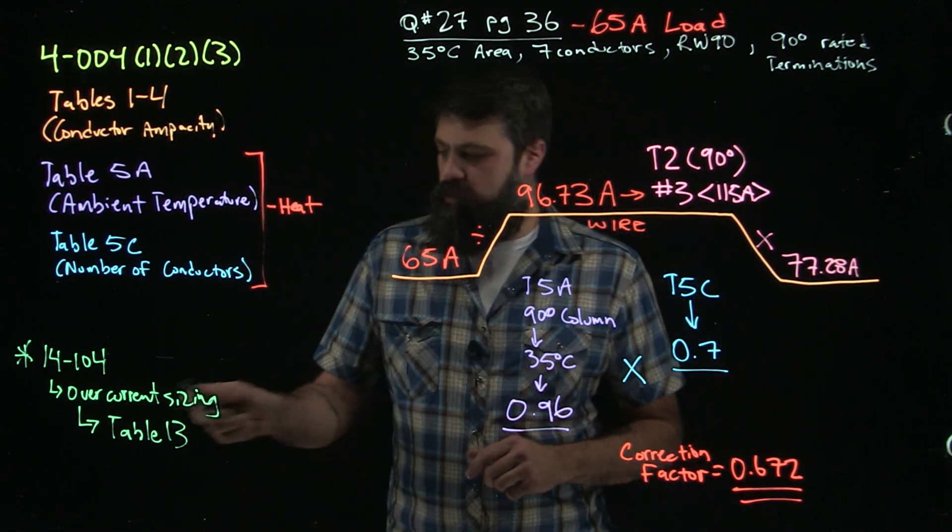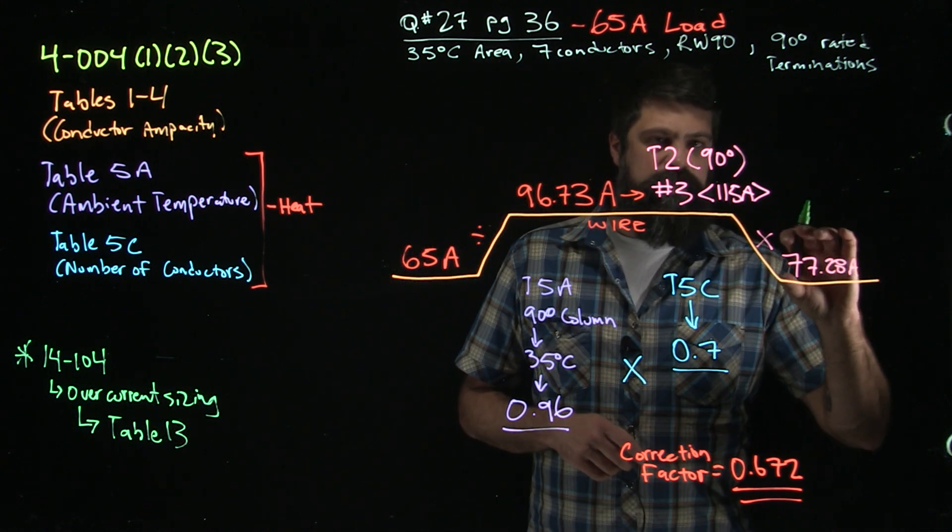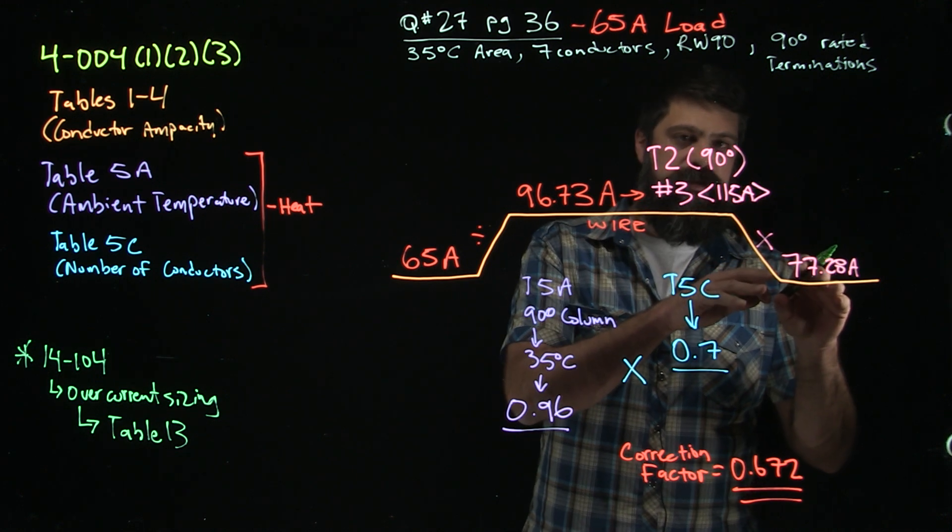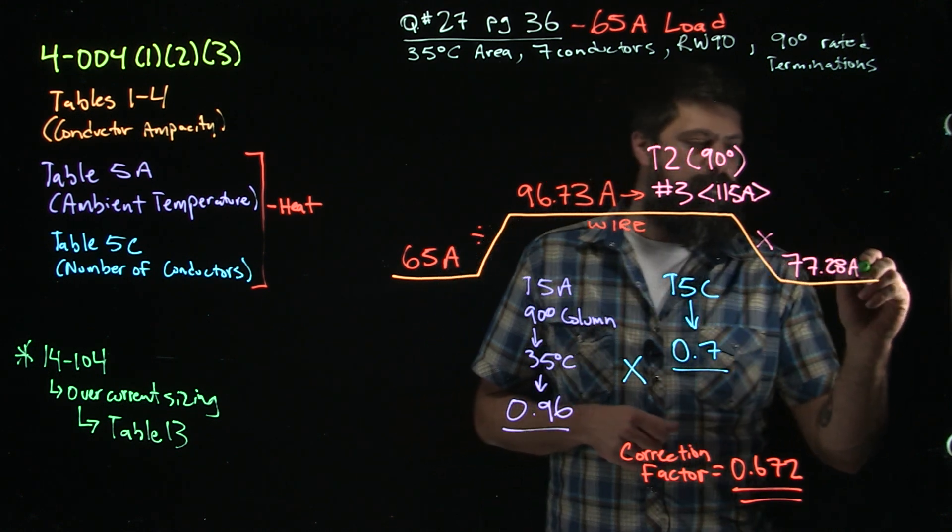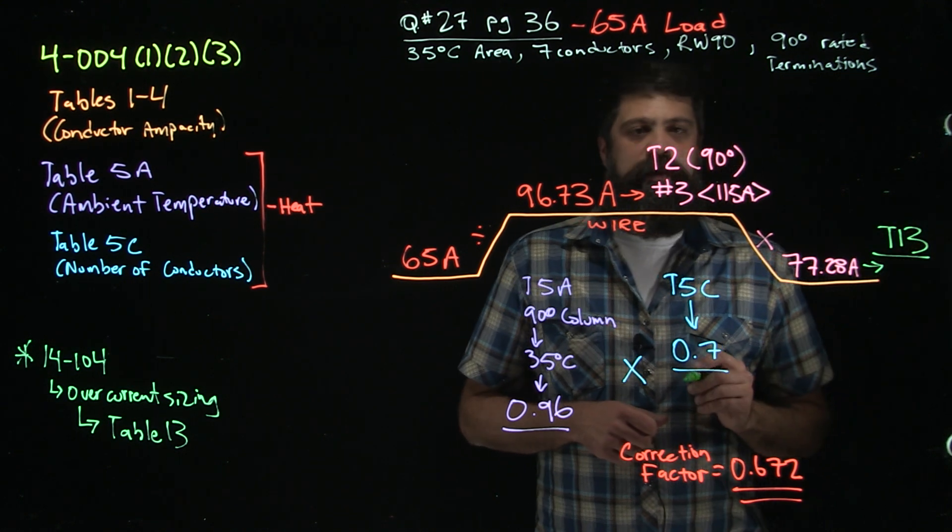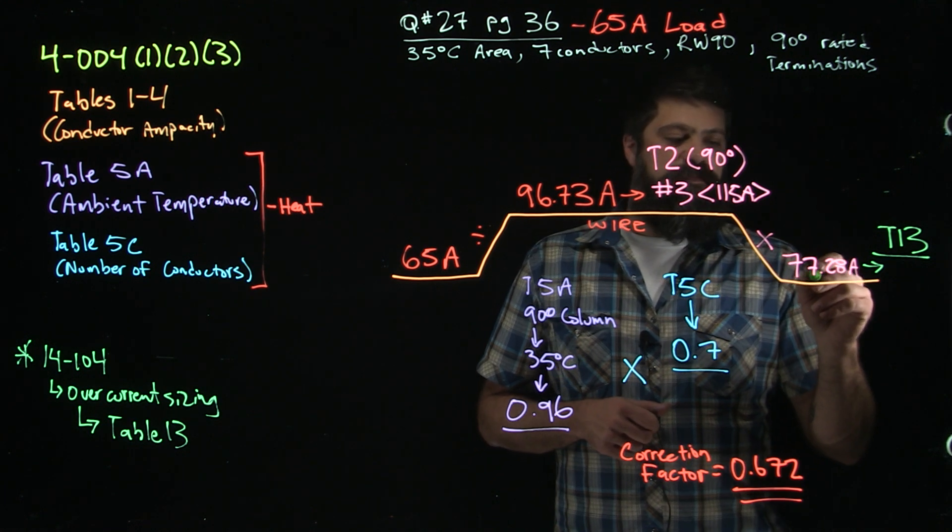Now, this is the number when we're using rule 14.104. What is the breaker there to do? The breaker is there to protect this wire. So under these conditions, 115 amp number 3 can really only handle 77.28 amps. That's what I'm sizing my breaker for.